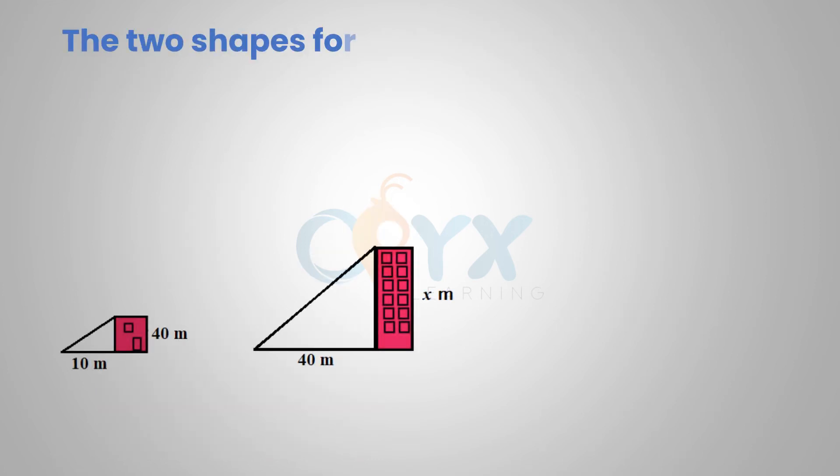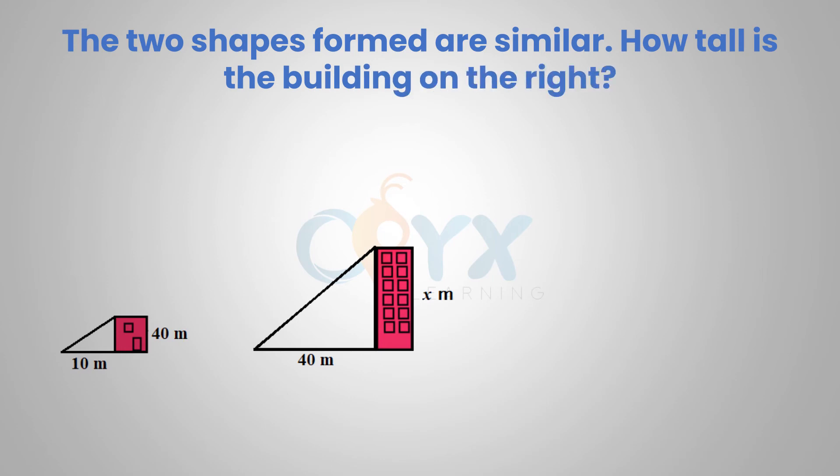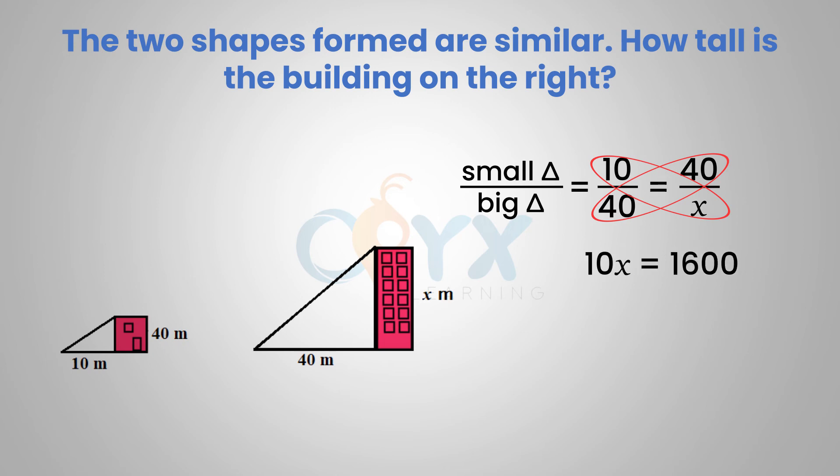The two shapes formed are similar. How tall is the building on the right? If we compare the small triangle to the big triangle, then we can set up a proportion 10 over 40 equals 40 over x. Cross multiplying, we get 40 times 40 and 10 times x. So we can set up the equation 10x equals 1600. Dividing both sides of the equation by 10 will give us x equals 160 meters. So the height of the building on the right is 160 meters.